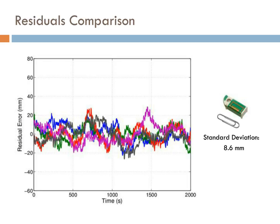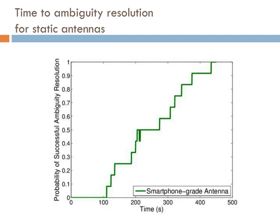The effect of this time correlation is ultimately an increase in RTK initialization time, also known as time-to-integer ambiguity resolution. This plot shows the empirical probability of successful integer ambiguity resolution for the smartphone-grade antenna tracking seven satellites. On the x-axis is measurement duration, and the y-axis is success rate probability. We're looking at about 400 seconds to get to 90% for a static smartphone antenna, which would obviously exceed the patience of the average smartphone user.